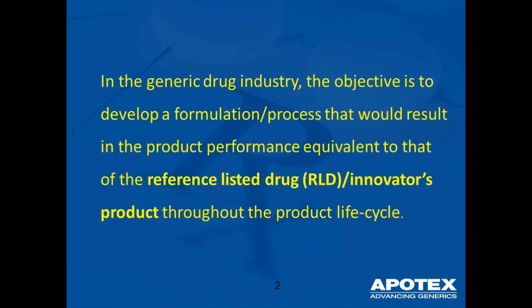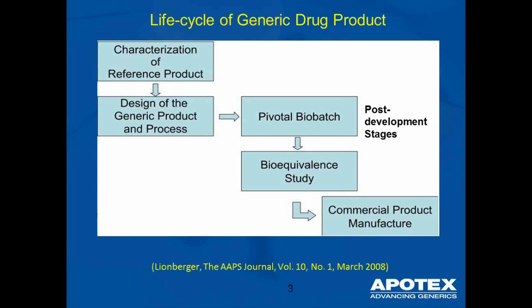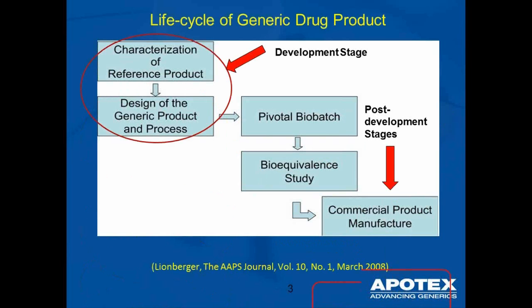In the generic industry, the objective is to develop a formulation process that would result in product performance equivalent to the reference-listed drug or innovator's product throughout the product's life cycle. This simplified scheme illustrates the major steps of generic drug product development: characterization of the reference product, followed by design of the generic drug product and process — which I call development stages — then pivotal bio-studies, and finally commercial manufacturing, which I call post-development stages.